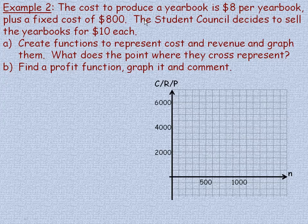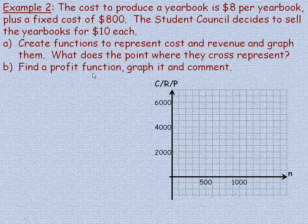In example two, we're told that the cost to produce a yearbook is $8 per yearbook with a fixed cost of $800. The student council decides they want to sell the yearbooks at a fairly low cost — they're going to sell them to the students at $10 each. They're asked to create functions to represent the cost and revenue, then graph them, and comment on what the point represents where those two cross.